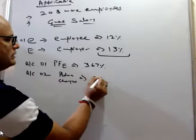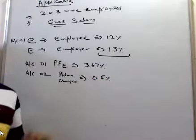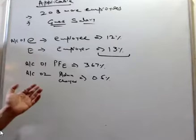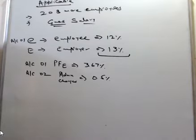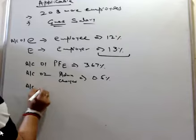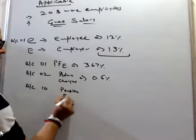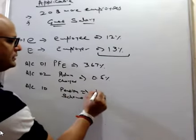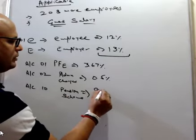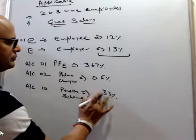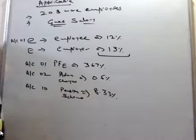This thirteen percent will get bifurcated. Account number one: PFE three point six seven percent. Account number zero two: admin charges, it will be 0.5. Admin charges are for government. Next is account number ten: that is the pension scheme, 8.33 percent.